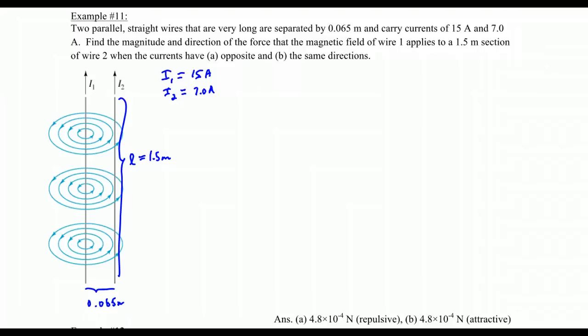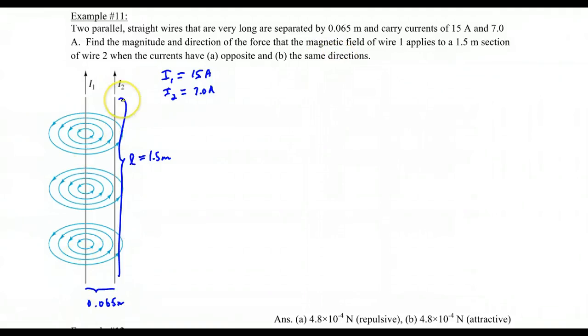This question is really about the interaction force between these two long straight parallel current-carrying conductors. In part A we're asking what would be the magnitude of the force and direction when the two wires have currents going in the opposite direction. In part B we're asking what would it be if they were in the same direction, which is shown here in the picture. So let's answer part B first.